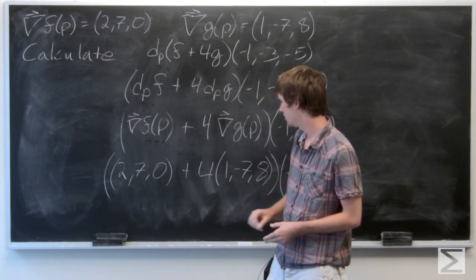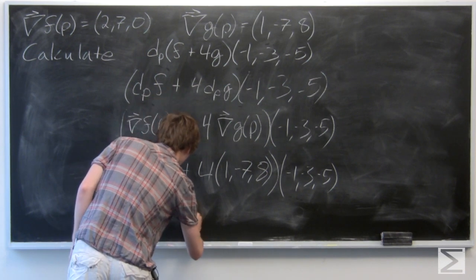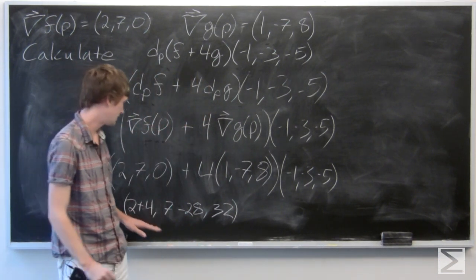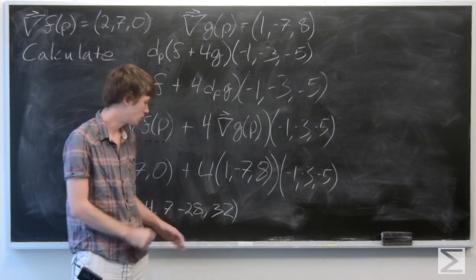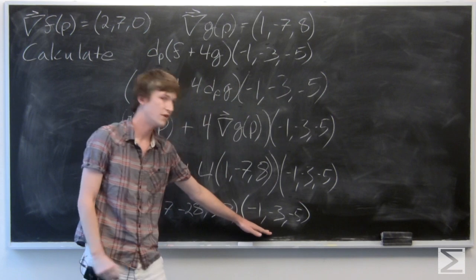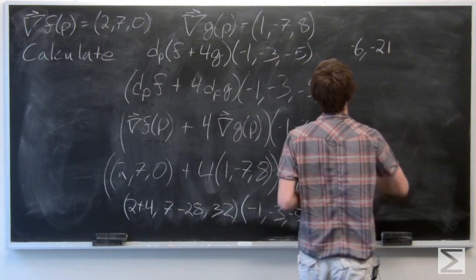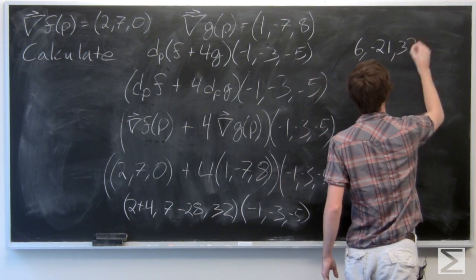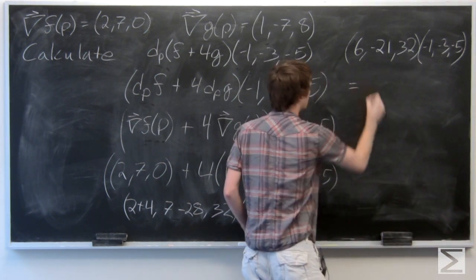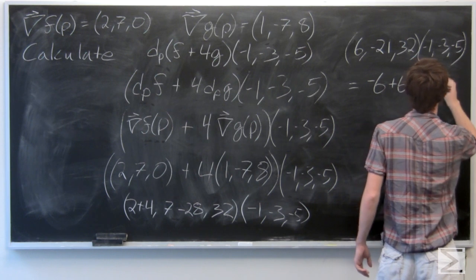So if we add these, we see that we have 2 plus 4, which is 6, comma 7 minus 28, which is negative 21, comma 32, with respect to the vector negative 1, negative 3, negative 5. So we'll do this up here. That equals negative 6, plus 63, minus 160.